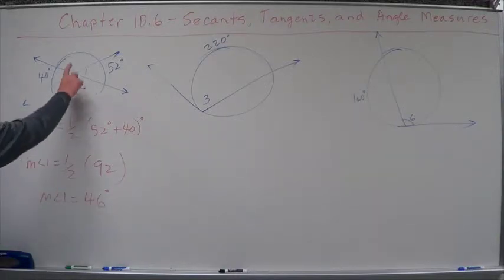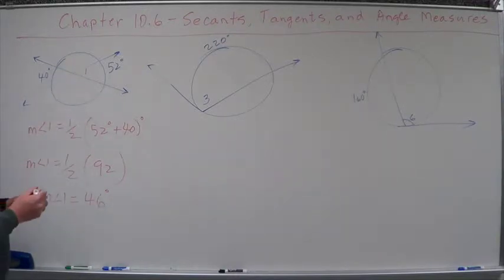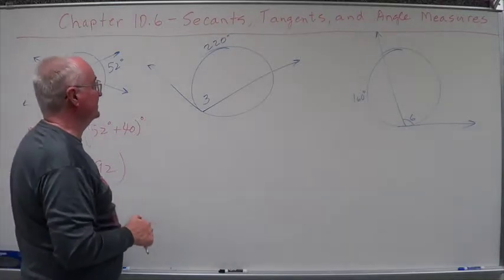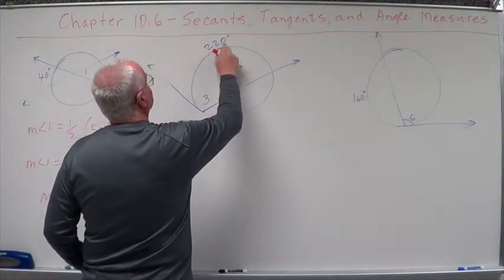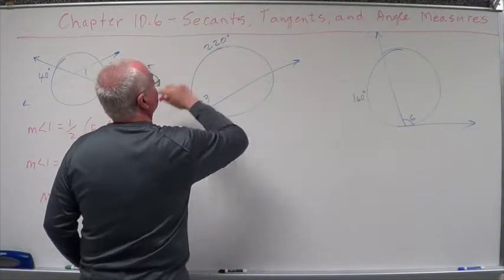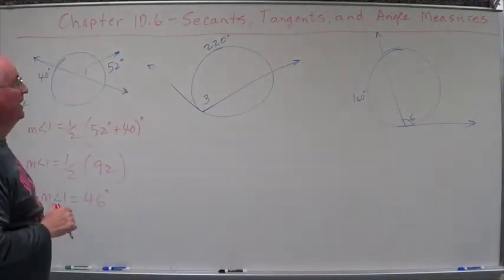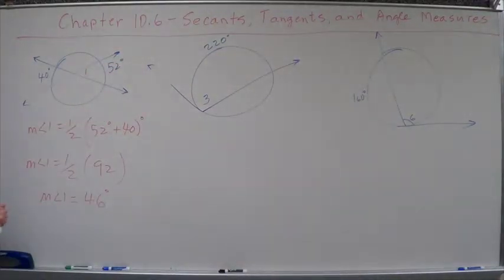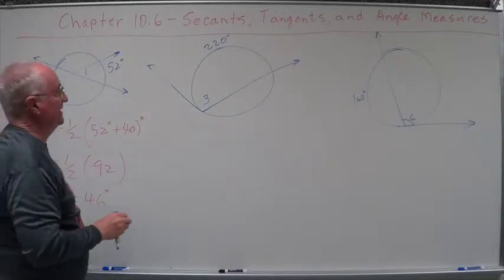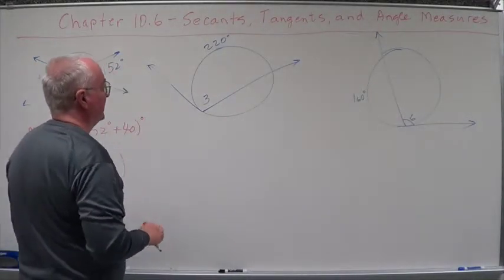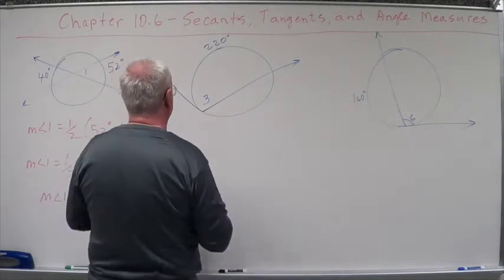It's a sample of interior intersection. Now look at this one. This is a sample of, oh, circles are getting out of hand again here, getting a little ragged. This is a sample of an intersection on the circle. We want to find the measure of angle three.